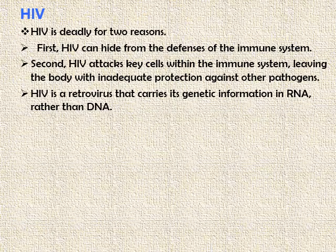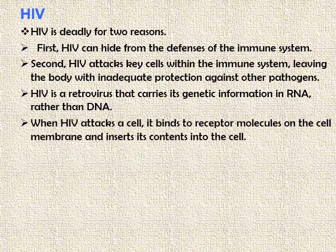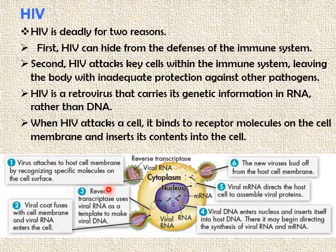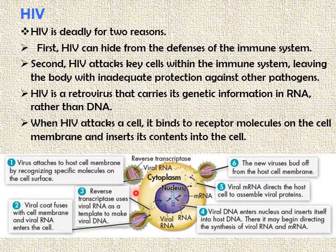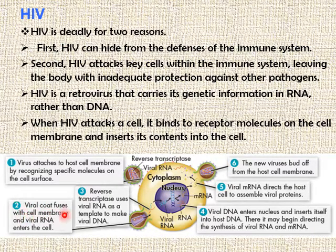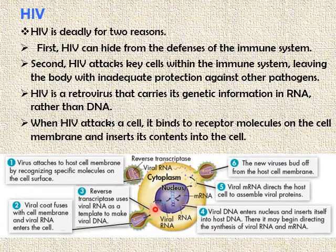HIV is a retrovirus that carries its genetic information in RNA rather than DNA. When HIV attacks a cell, it binds to receptor molecules on the cell surface membrane and inserts its content into the cell. As you can see in the diagram, a virus attaches to the host surface membrane by recognizing specific molecules on the cell surface membrane. The cell capsid — the protein — attaches to the host cell surface membrane. Then the viral coat fuses with the cell surface membrane and viral RNA enters the cell, while the protein coat or capsid remains outside on the host cell surface membrane.